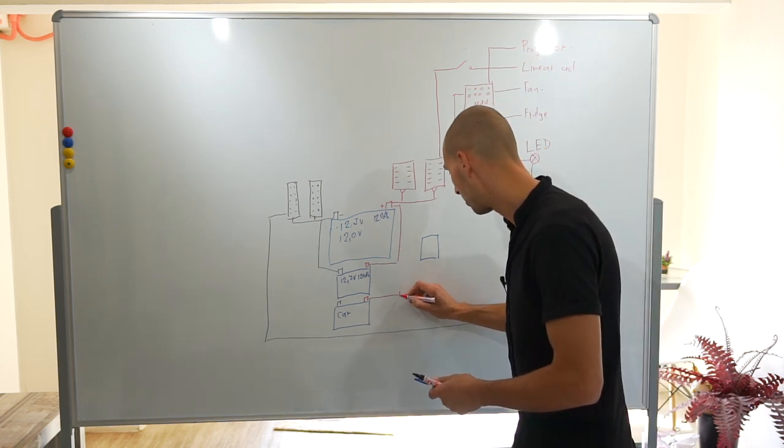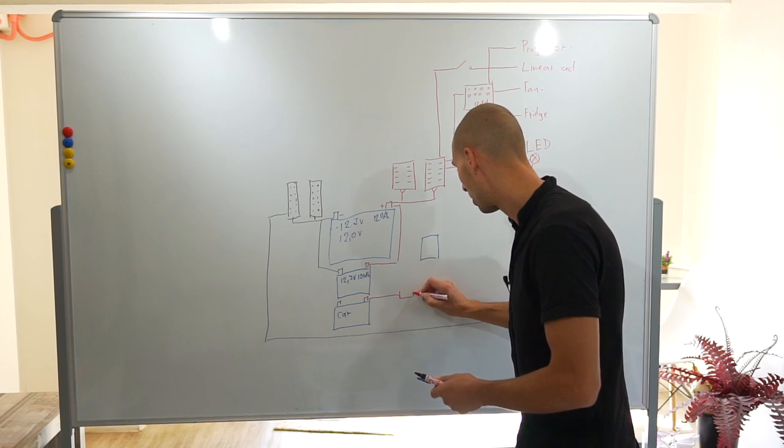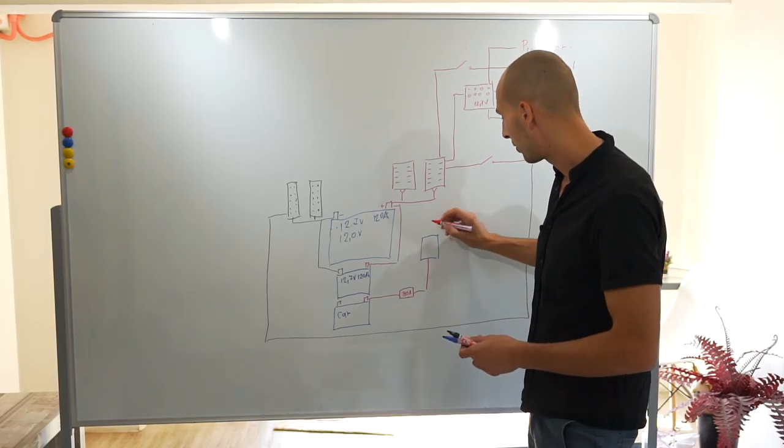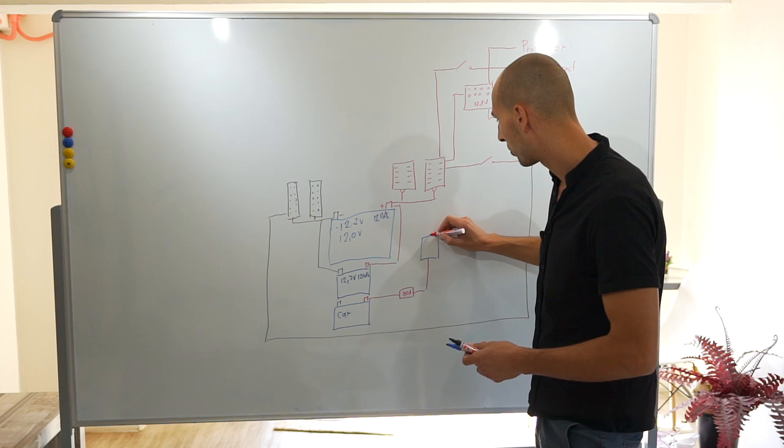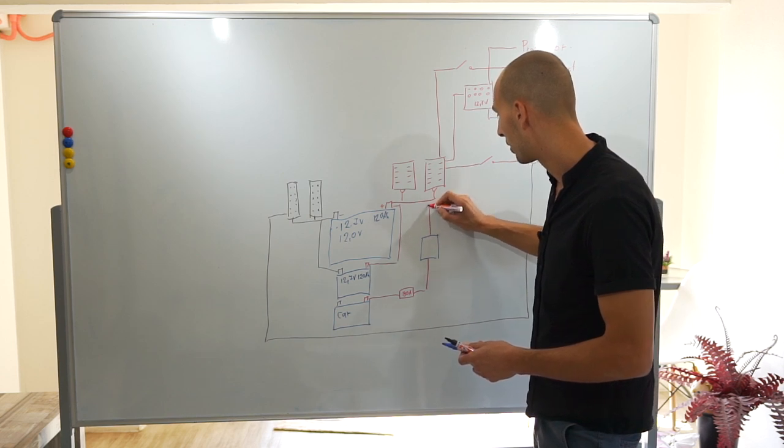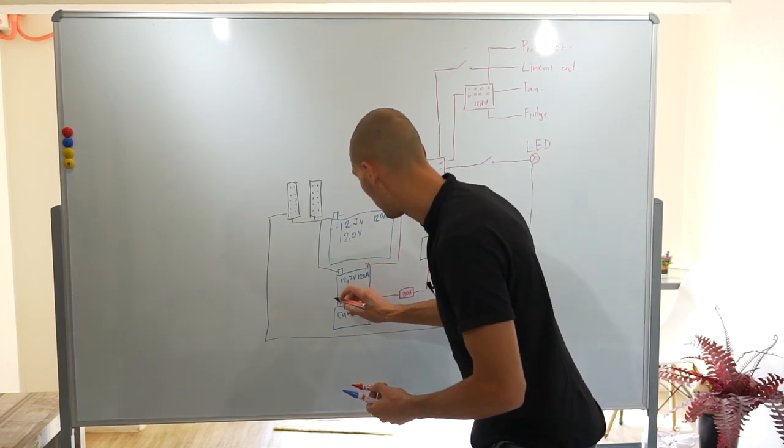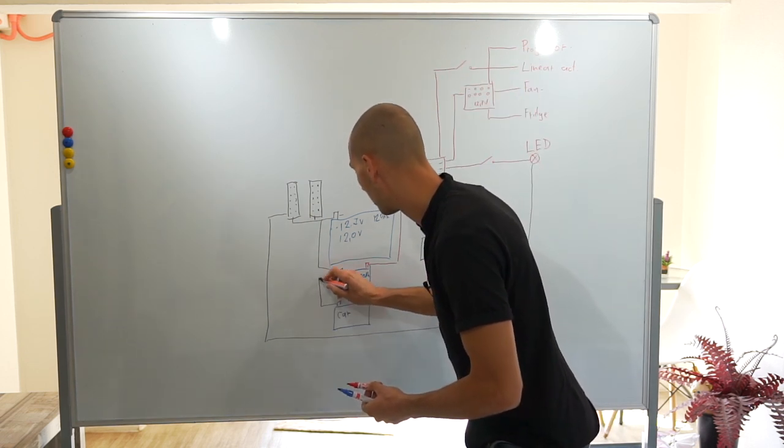So let's say this can be a fuse. This can be an 80 amp fuse, and that goes to this device, and then from this device it goes to the battery itself to the positive. And negative is super simple. That just goes like this to the rest.